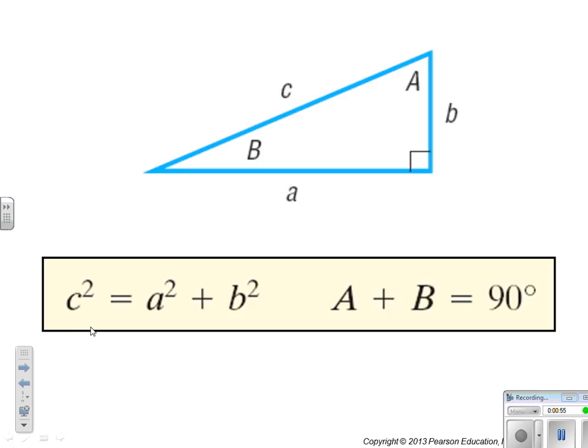Remembering our Pythagorean Theorem, C squared equals A squared plus B squared, and the fact that A and B are complementary. So, A plus B is 90 degrees.